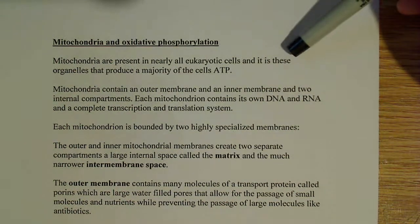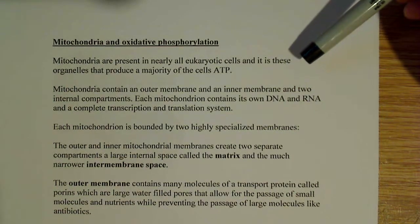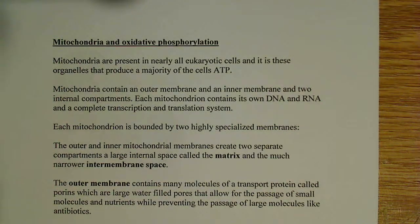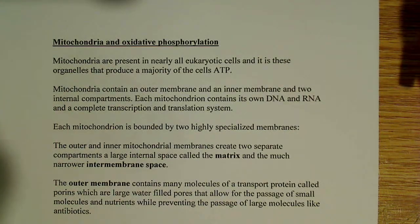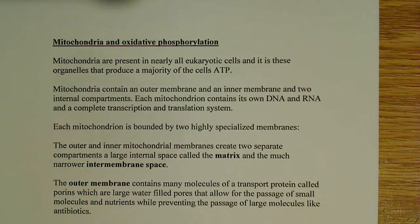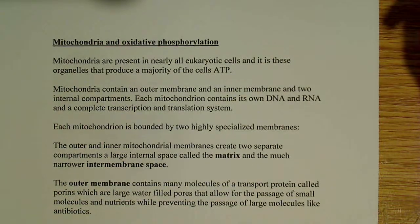We talked about glycolysis, and we learned that you could form a net of two ATPs and two NADH molecules, but nothing significant — not a significant amount of energy. But in aerobic respiration, you can actually produce between 30 and 32 ATPs. That is quite a significant difference, and quite a lot of energy that's going to be generated.